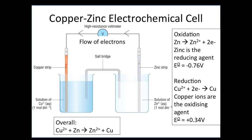We can combine two half equations to show the overall equation as shown on the slide. The following slide takes you through in more detail how to calculate the electrode potential for the cell and how the overall equation was written.